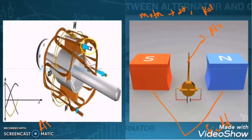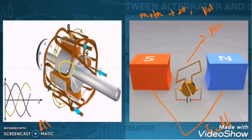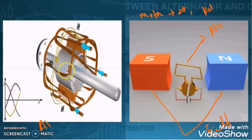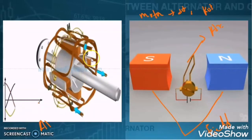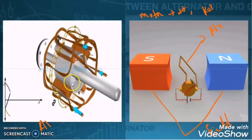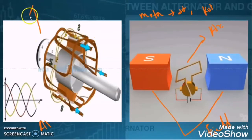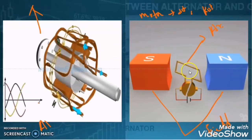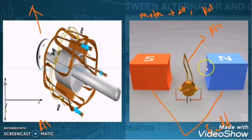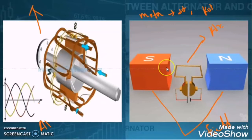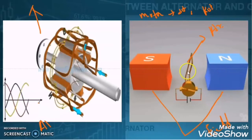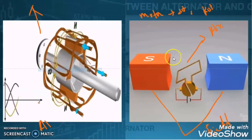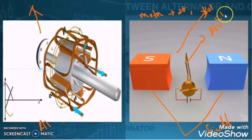In the alternator, the field winding is rotating with respect to the armature, so there is a relative motion between the magnetic field and the conductor or coil — and it is also producing electrical energy. In case of a generator, the armature is moving with respect to the field winding, so there is a relative motion between the magnetic field and the conductor or coil — and it is also producing electrical energy.